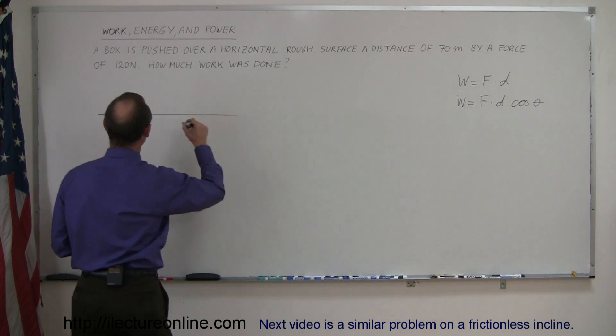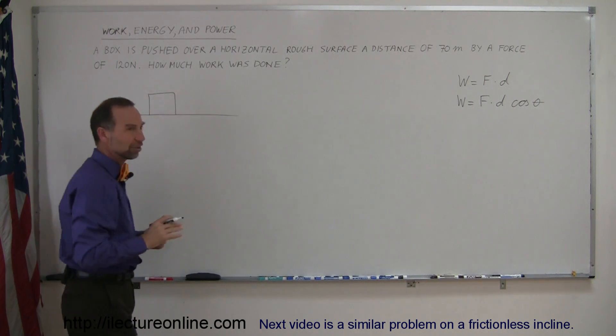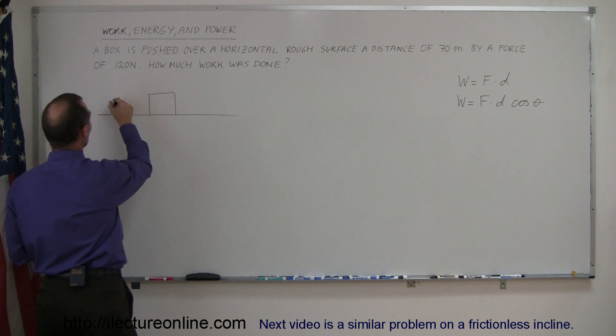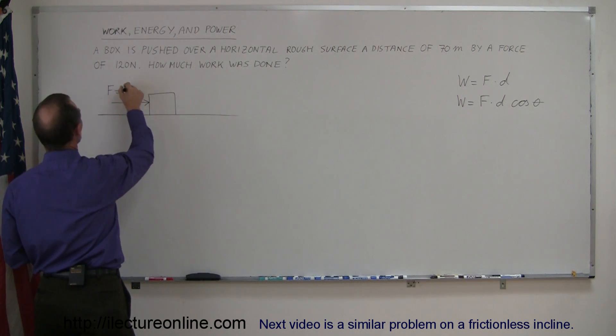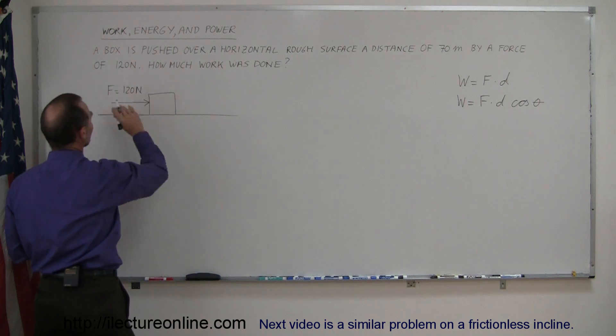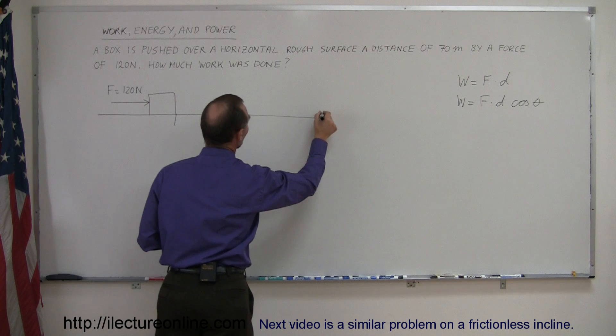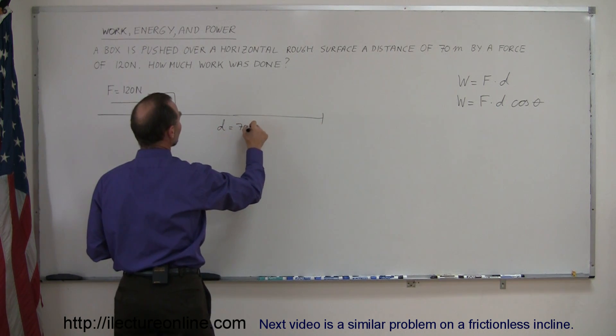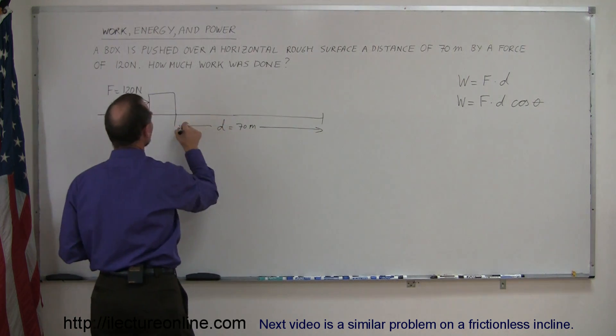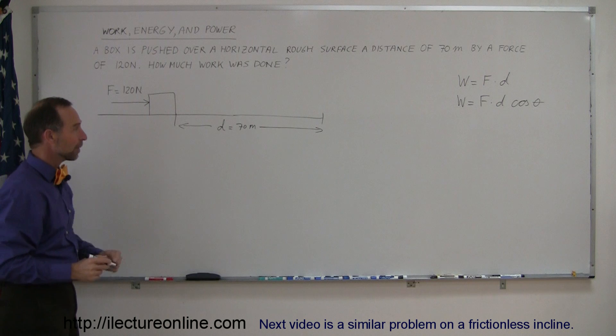So here's a rough surface, here's a box. We don't need to know what the coefficient of friction is, we don't need to know what the mass is, because it simply says that a force is used, the force being equal to 120 newtons, pushing let's say to the right, and the box moves the distance over the surface of 70 meters. So the displacement or distance is 70 meters.